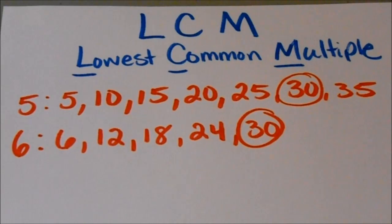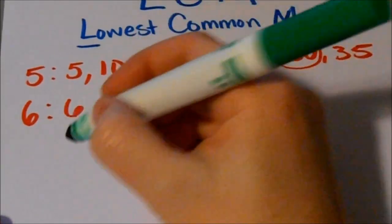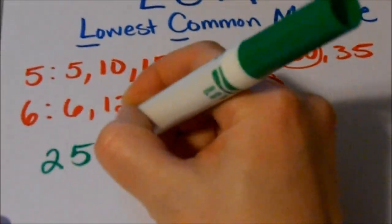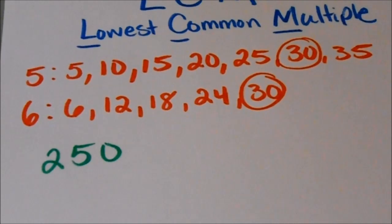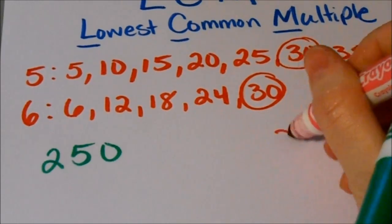However, I wanted to show you also how you can use prime factorization to find the lowest common multiple. And this is very helpful when you are working with larger numbers. For example, if you are trying to find the lowest common multiple of 250 and 360.